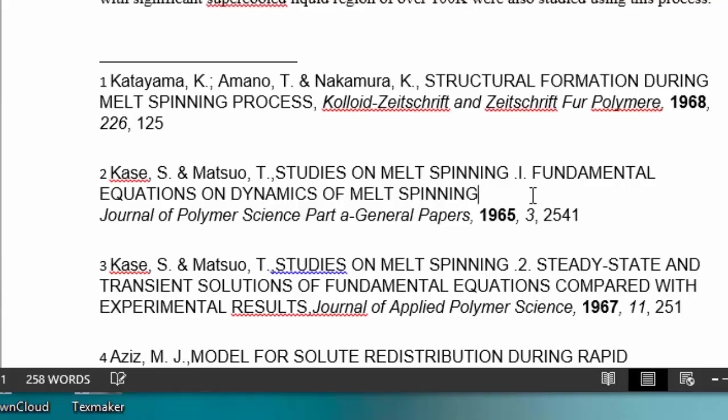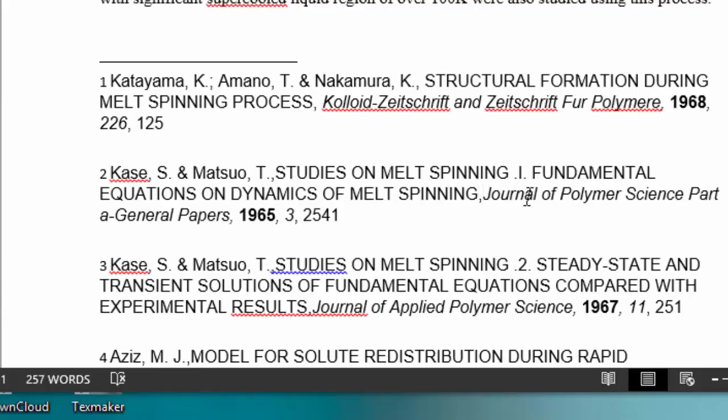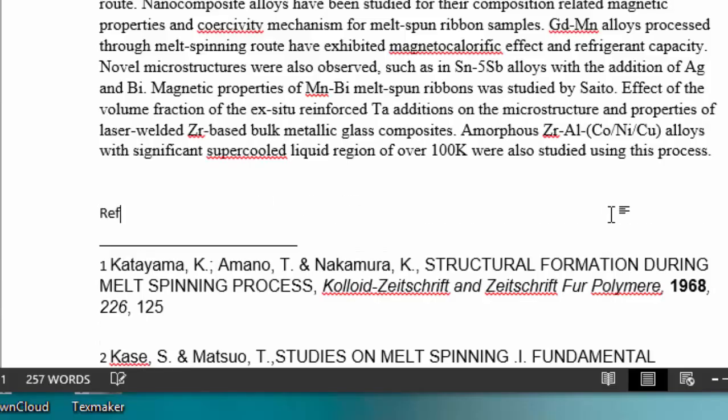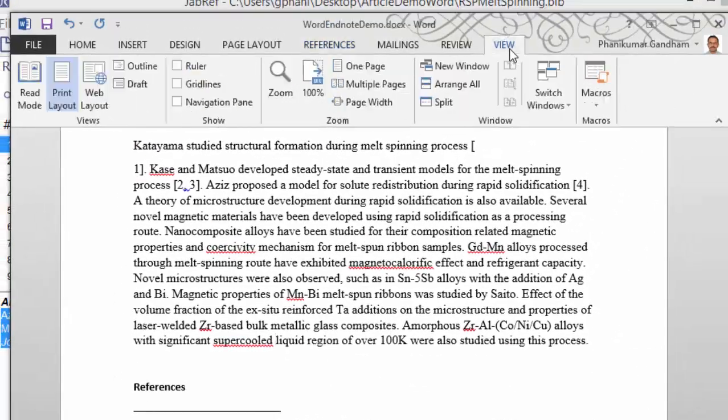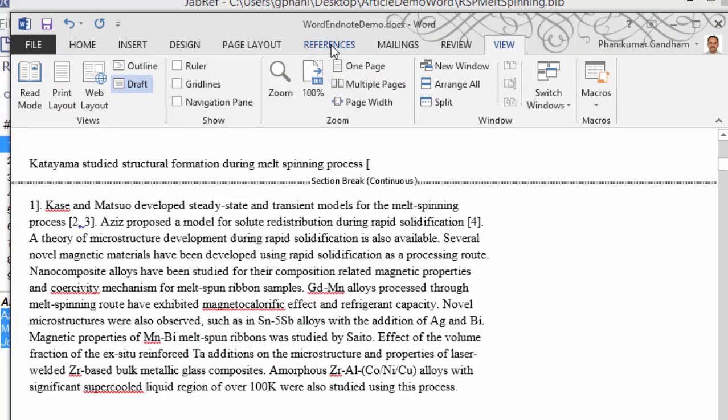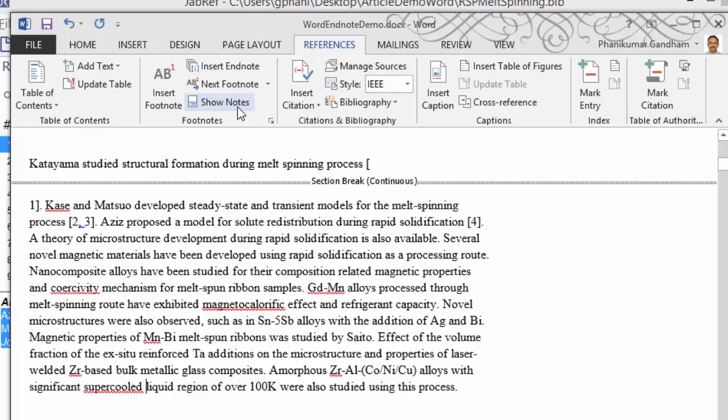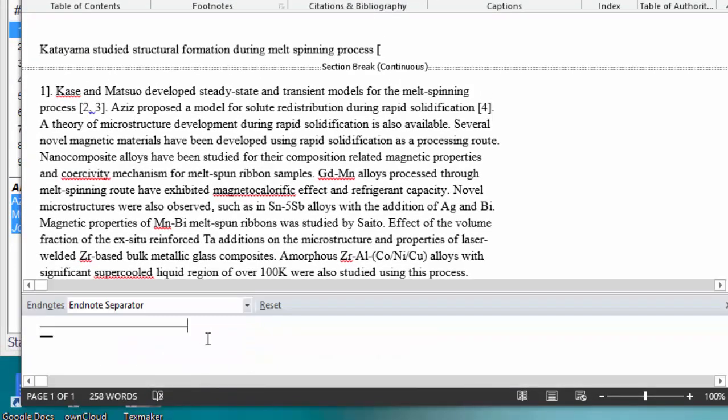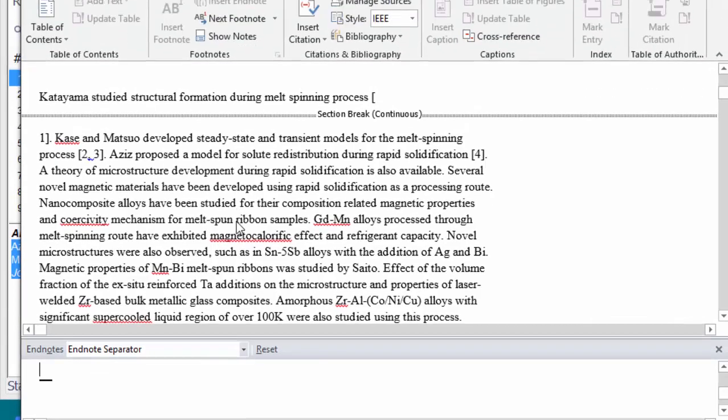There is also a line that comes here which you may not like, so we could change that as follows. Go to view and click on draft, then go to references tab, then show notes. At the bottom we select EndNote separator, and now we have the line. We simply remove that line and then close.